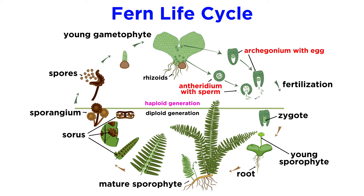Just as with previous plant groups, anthridial heads produce sperm cells through mitosis, and archegonial heads produce egg cells, also through mitosis. When there is sufficient water in the environment, the sperm cells can swim to the archegonial heads and fertilize the egg cells.